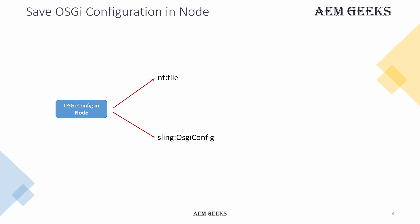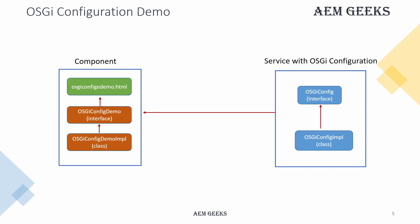Every time you cannot change those configurations inside the console, so you have to deploy them as part of the code base. You have two options: you can store that configuration as a file with primary type nt:file, or you can create a Sling OSGi config node. I'll show you both - a complete demo with a service OSGi config implementation with five fields.